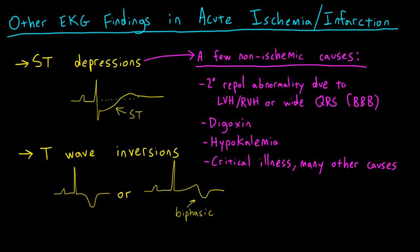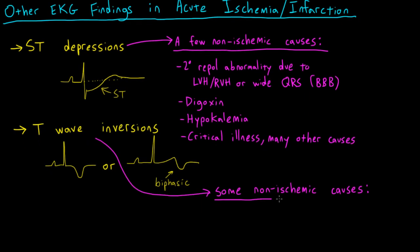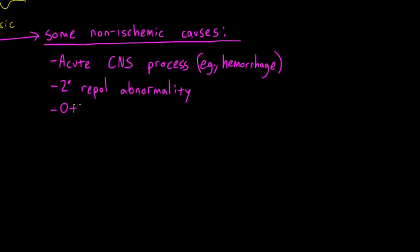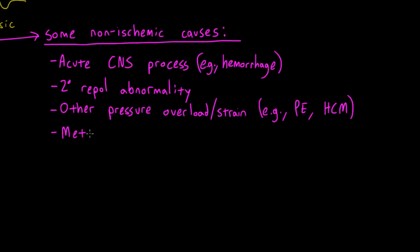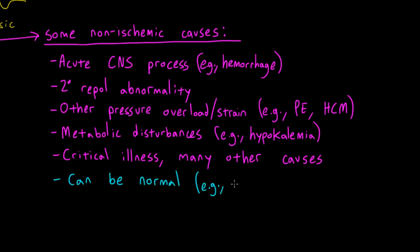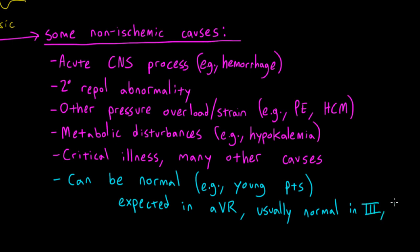Important non-ischemic causes of prominent T wave inversions include acute CNS processes such as stroke or intracranial bleed; secondary repolarization abnormality due to long-standing hypertrophy or bundle branch block; ventricular pressure overload or strain such as pulmonary embolism or apical hypertrophic cardiomyopathy; and metabolic disturbances such as hypokalemia. Note that T wave inversions can be normal — for example, in young patients it's common to see inverted T waves in right precordial leads V1 and V2, and T wave inversions are expected in lead AVR and usually normal in leads 3 and V1.